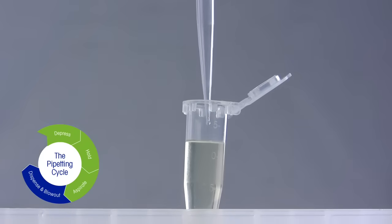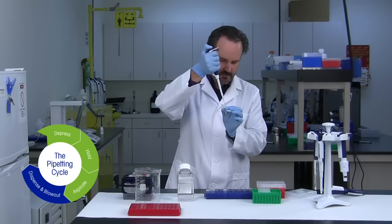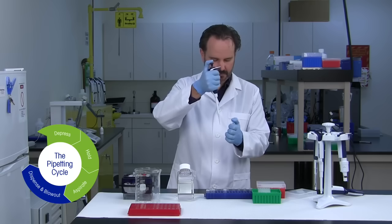Then, with the tip slightly above the liquid, lightly touch the vessel wall with the end of the tip and release the plunger, allowing it to return to the home position.